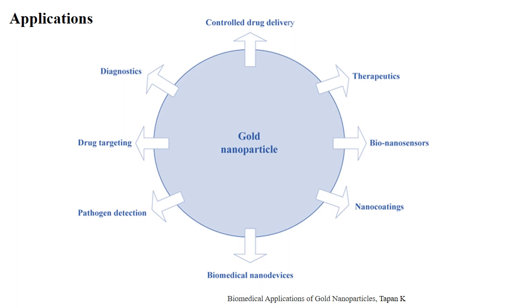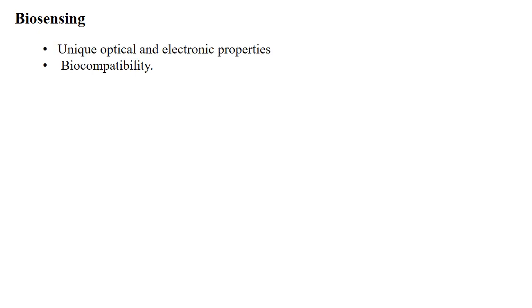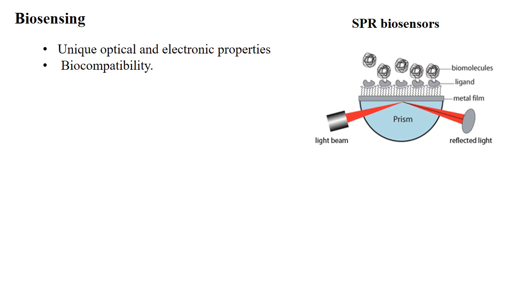The first application is biosensing. Because of the unique optical and electronic properties of gold nanoparticles, as well as their biocompatibility, they are widely used in biosensing applications. One such biosensor is the SPR biosensor, which is an optical sensor that measures changes in light or photon output. This optical phenomenon involves the interaction between electromagnetic waves and conduction band electrons on the SPR sensor surface, providing a wide range of opportunities for biomolecular recognition. Any biomolecule binding causes a shift in the SPR signal.